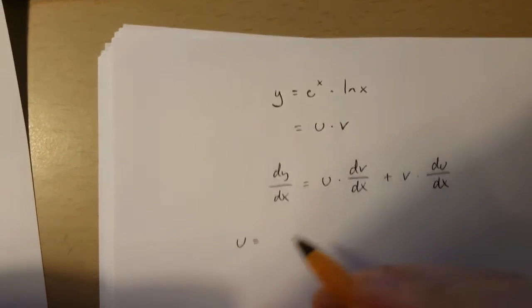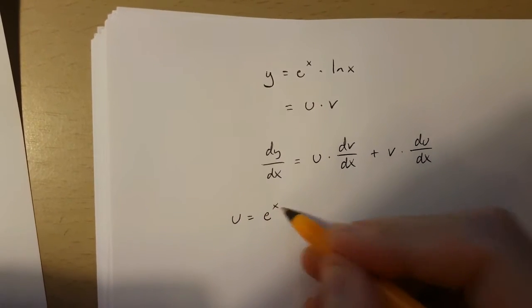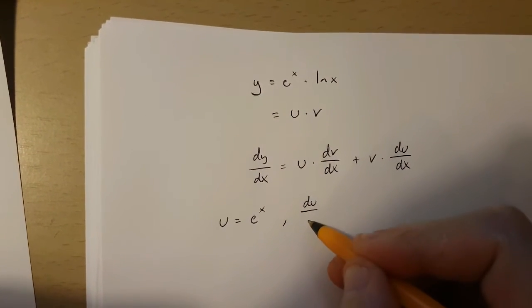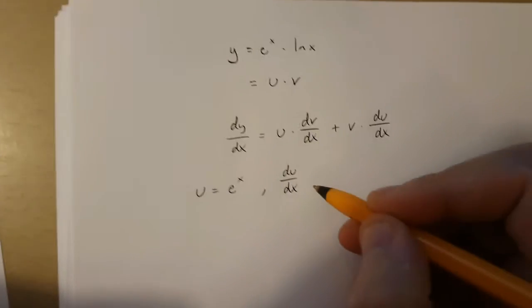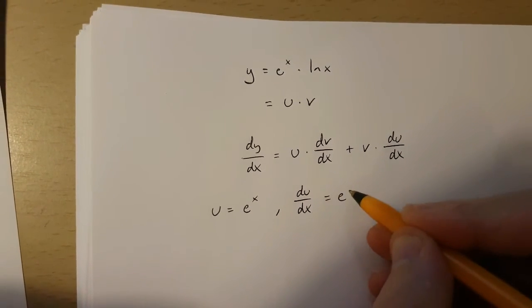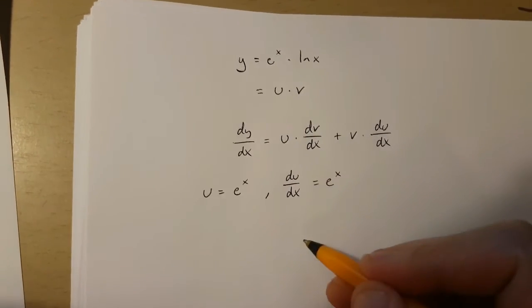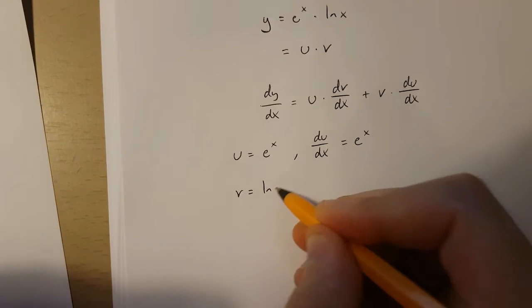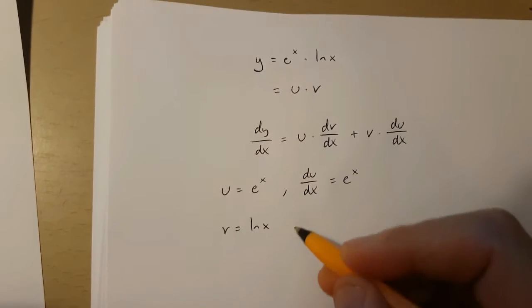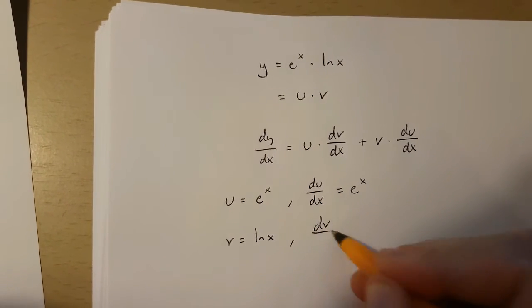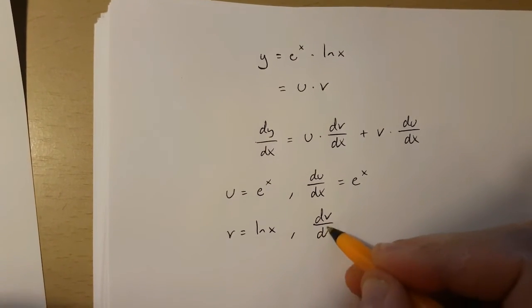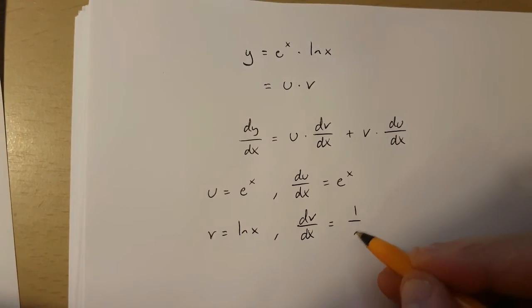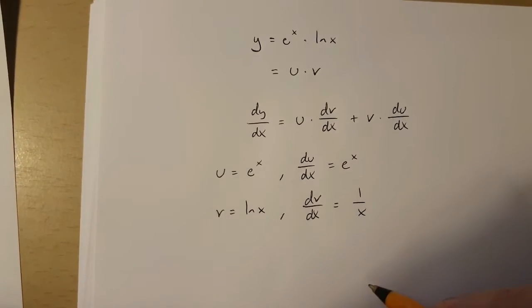Now if u is e to the power of x, then du/dx is going to be e to the power of x. And if v is ln(x), then dv/dx is going to be equal to 1 over x.